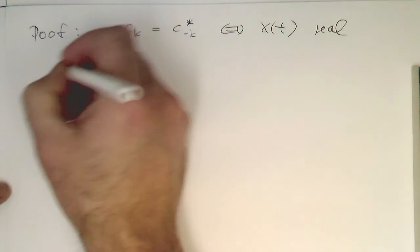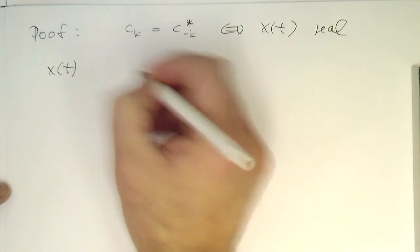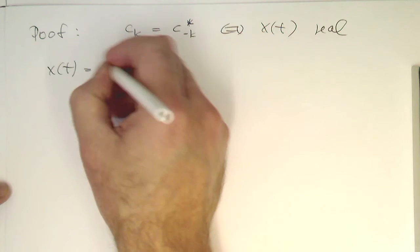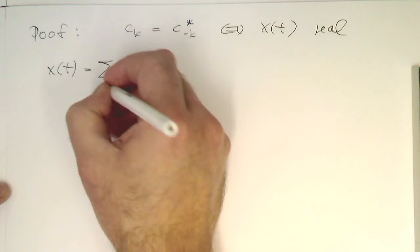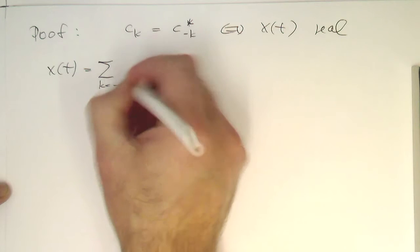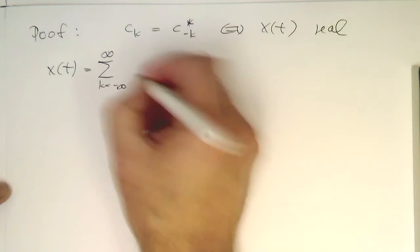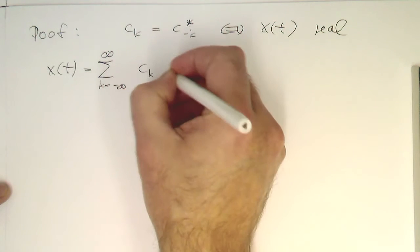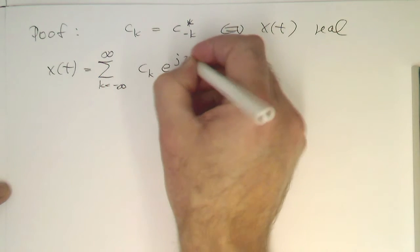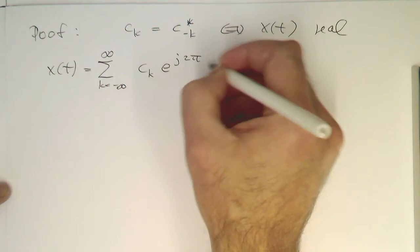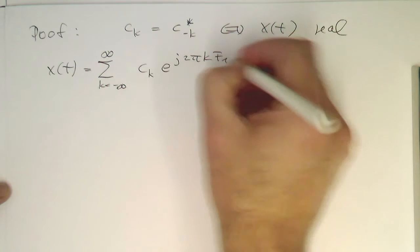So let's just write down the x(t) formula back on again here. We have our index running from minus infinity to plus infinity, and then we've got our coefficients, and then we are multiplying them with the complex frequencies here, k f1 t.